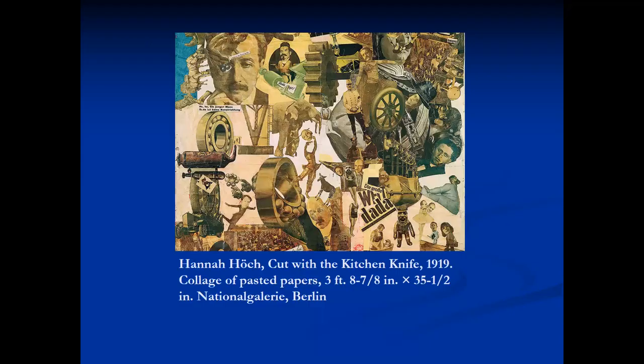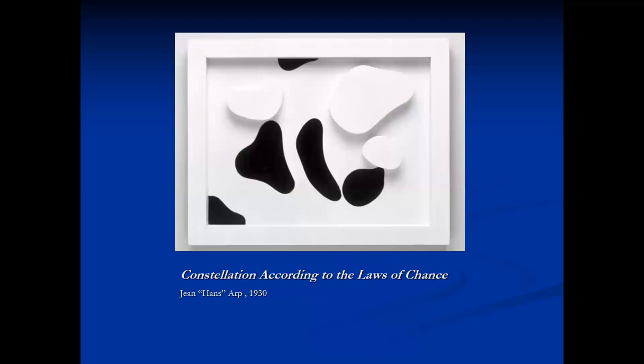Hannah Höch's 1919 Cut with the Kitchen Knife uses a technique of collage, pasted papers arranged on a canvas. Hans Arp arranged black and white shapes by the laws of chance to create compositions such as Constellation According to the Laws of Chance.